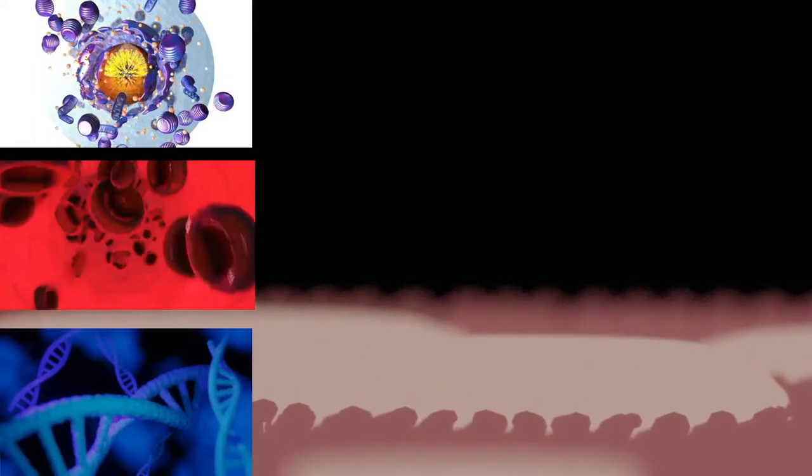Prokaryotic cell structure: cell wall, except genera Mycoplasma and Thermoplasma. Description: the outer covering of most cells protects the bacterial cell and gives it shape.